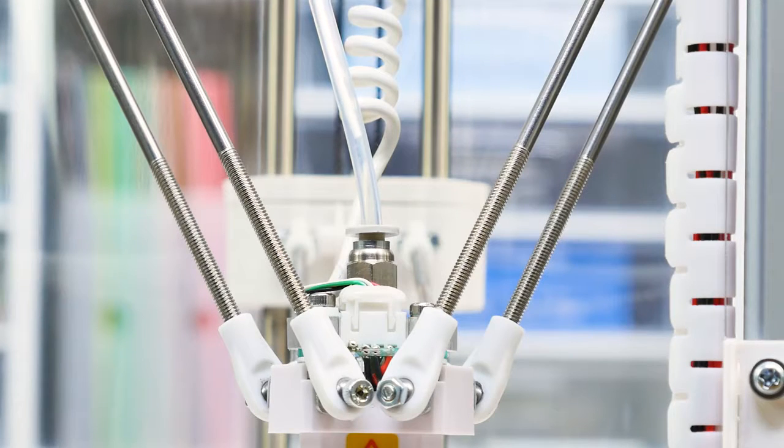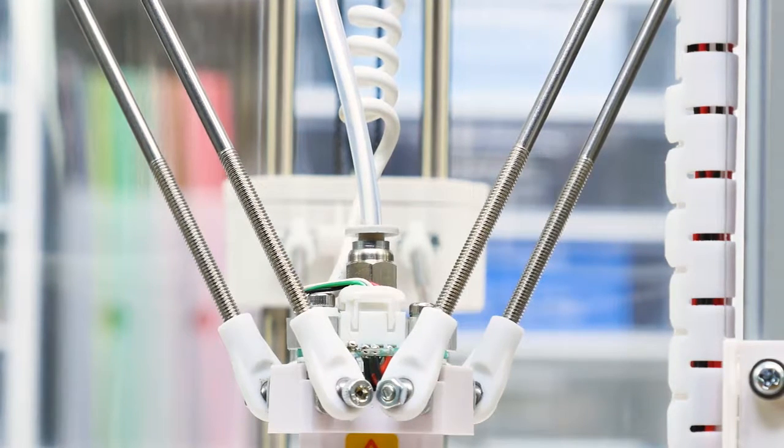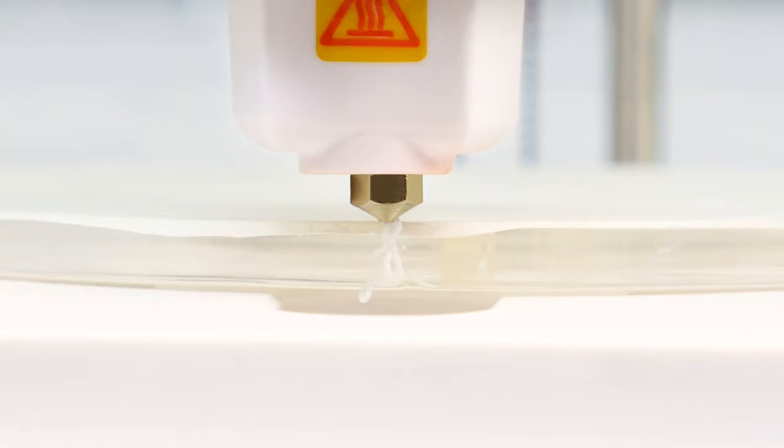The machine will feed the filament through the inner print tube and heat up the print head. The print head will then move down and print a little bit of filament once the filament is warmed up.